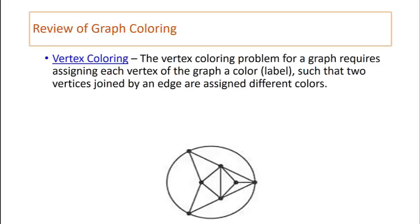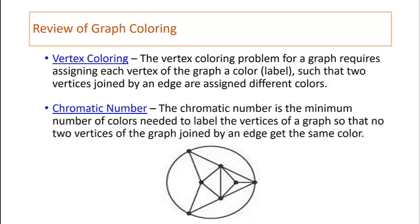Let's start with a quick review. The vertex coloring problem for a graph requires assigning each vertex of the graph a color or label such that two vertices joined by an edge are assigned different colors. The chromatic number is the minimum number of colors needed to label the vertices of a graph so that no two vertices of the graph joined by an edge get the same color.